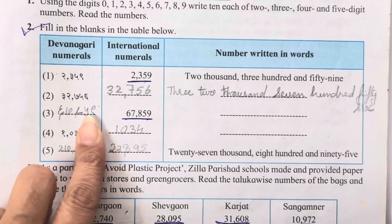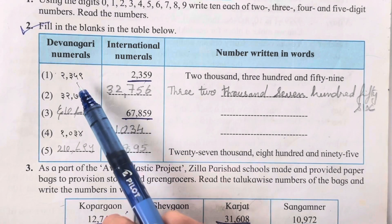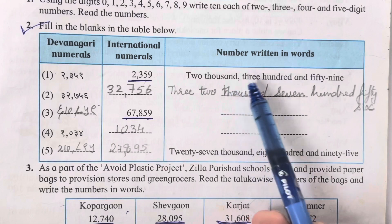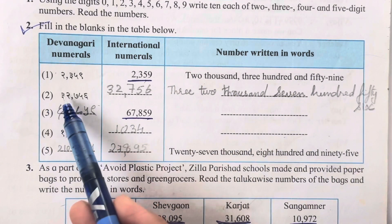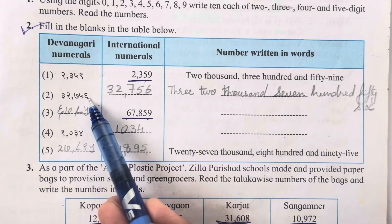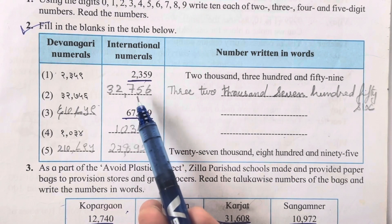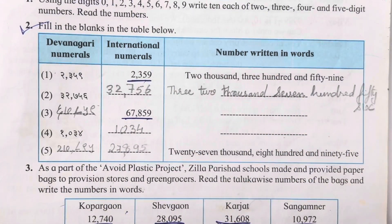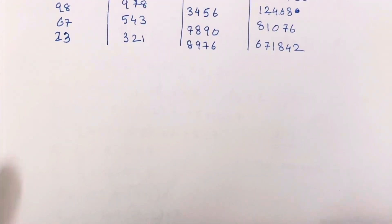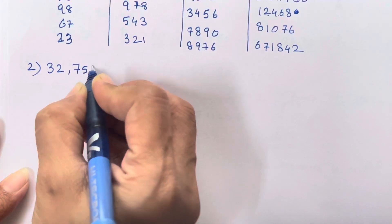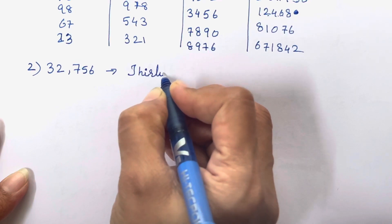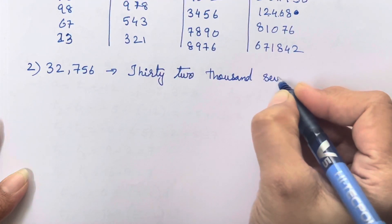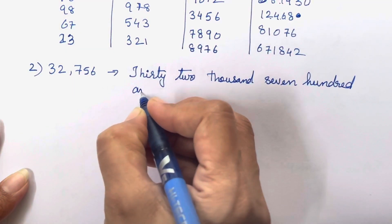Now let's move on to the next question. I'll explain it here and then we will write it in words. Devanagari means the numbers are given in Hindi - you have to write them in international numbers. For example, 2359 has already been done: two thousand three hundred and fifty-nine. Next was 32756 - you all know Hindi numbers. The answer written in words is thirty-two thousand seven hundred and fifty-six.